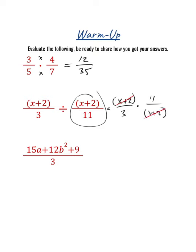We're looking for any common factors that we can simplify out. So this would really just be 11 over 3, because both of those have an x plus 2. You wouldn't need to distribute here, because having that factored form of x plus 2 already factored out is going to make our life easier.